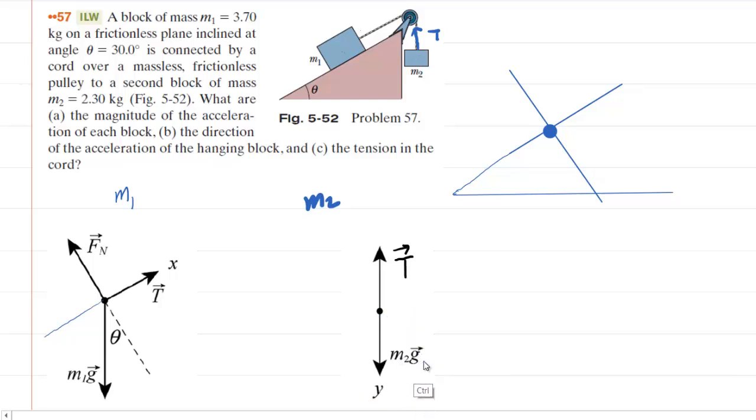So those would be the two free body diagrams. Next, it's important to understand that the angle that's formed by the incline will be the same as the angle between the gravitational force of M1 and this y-axis that we've drawn in right here.